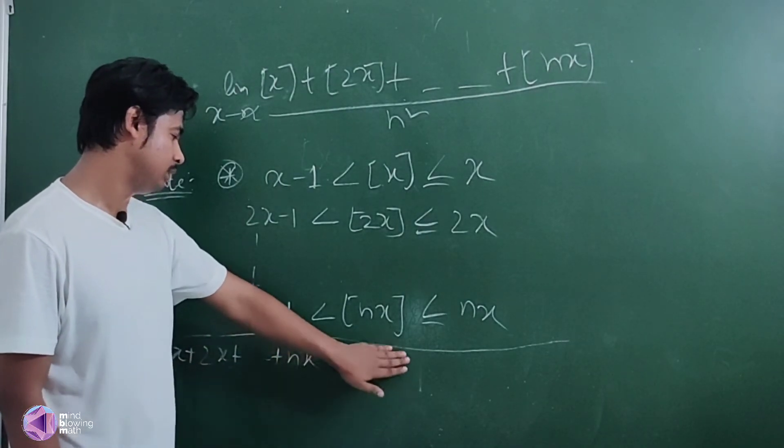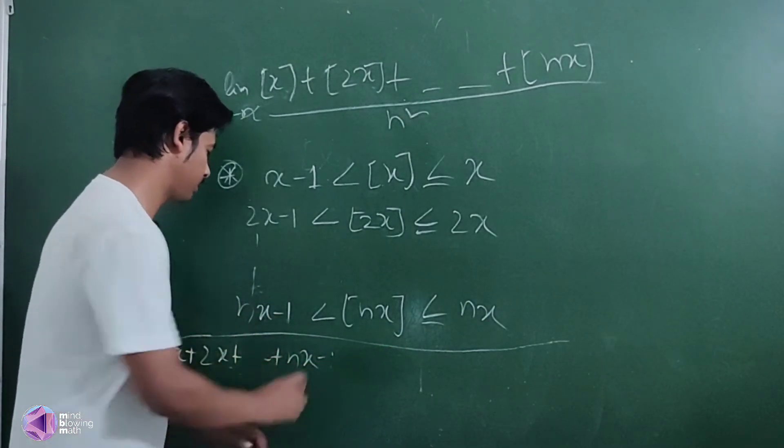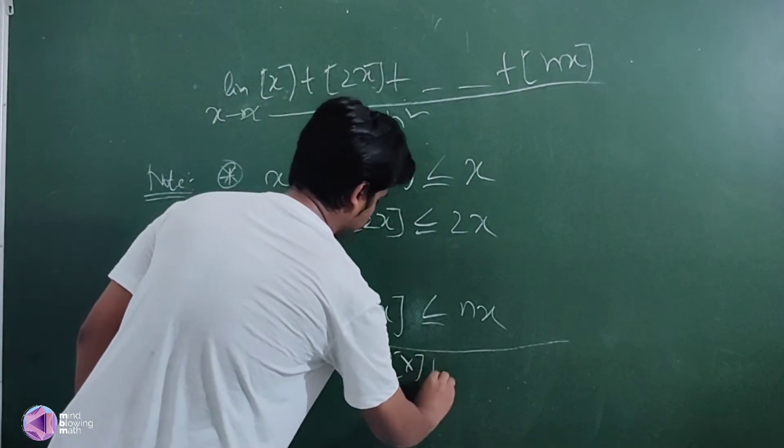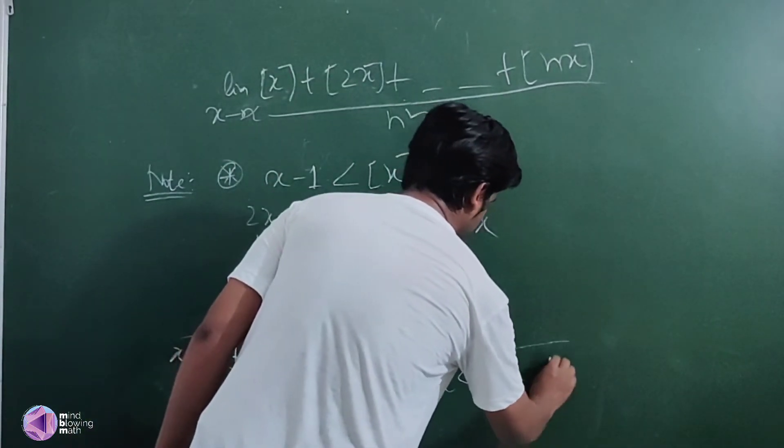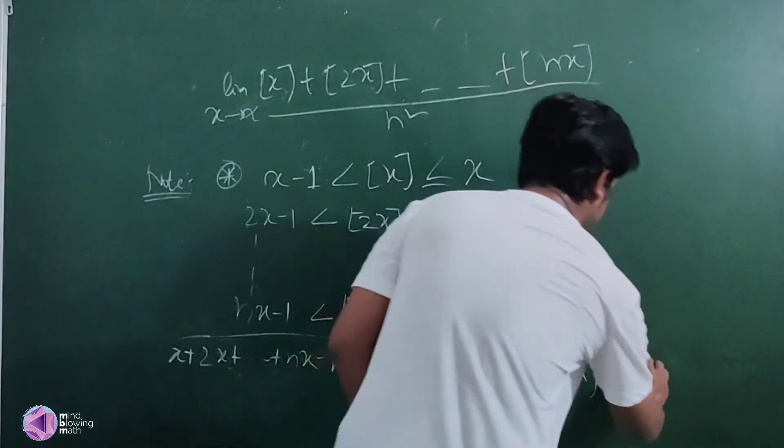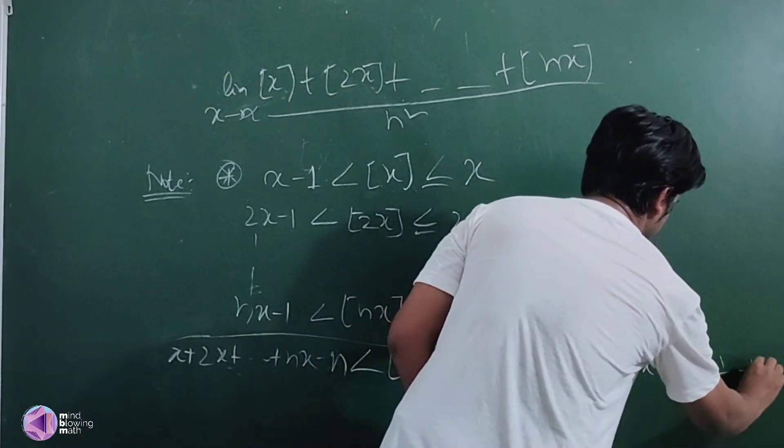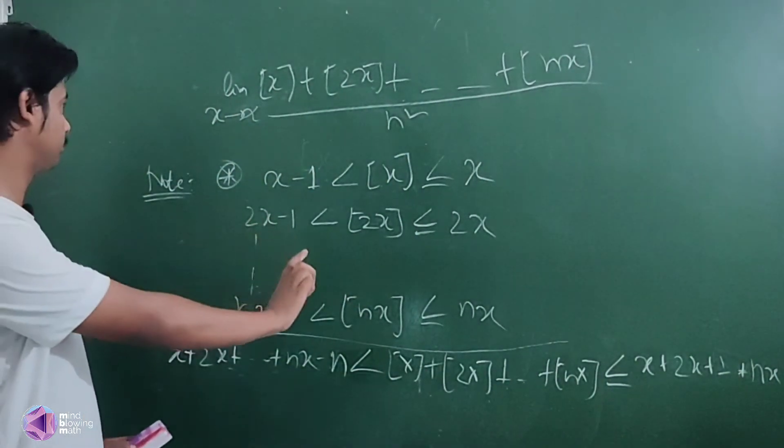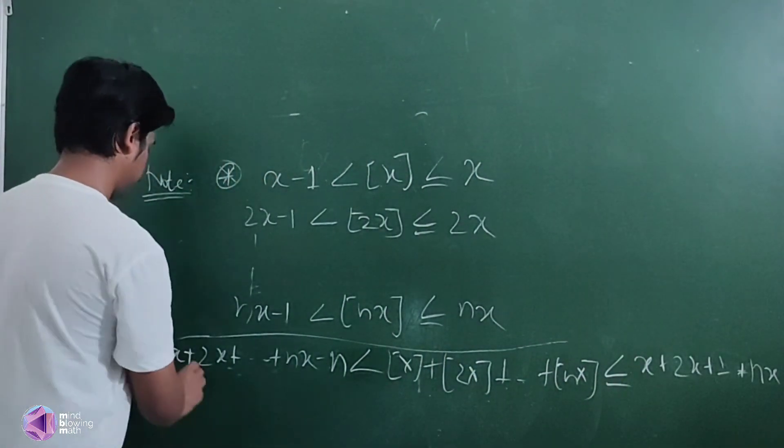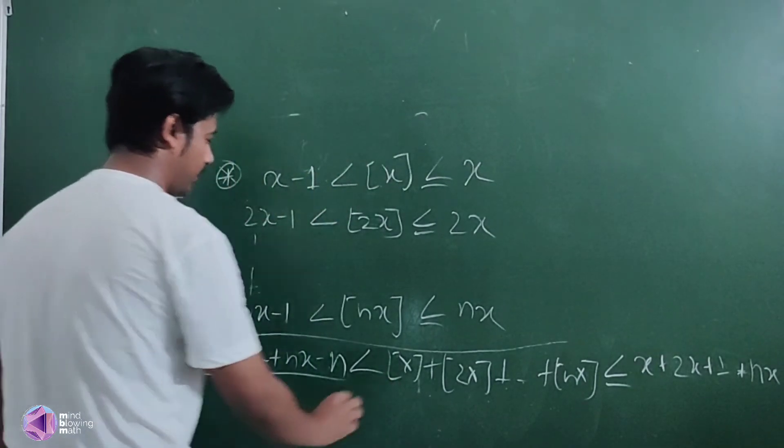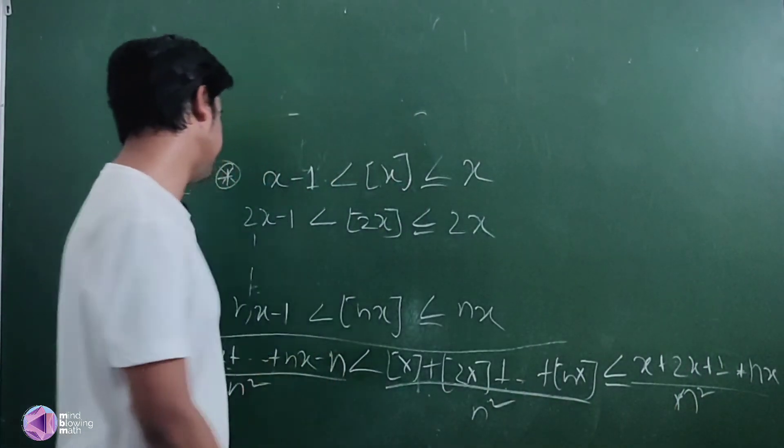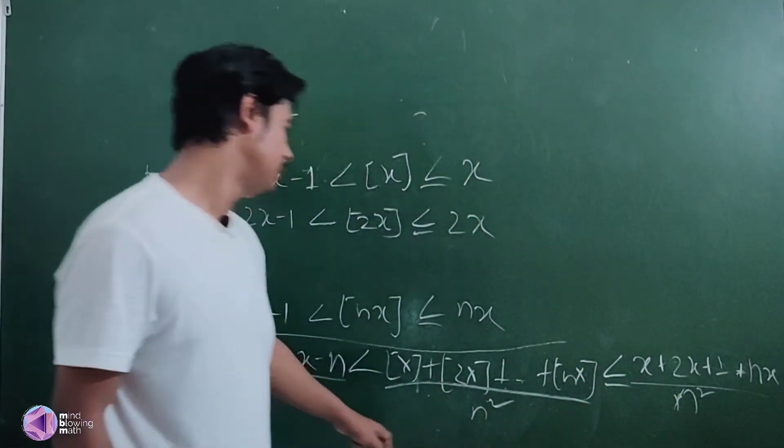Applying this property to each term and adding: (x + 2x + ... + nx) minus n is less than [x] + [2x] + ... + [nx], which is less than equal to (x + 2x + ... + nx). Dividing everything by n square and taking the limit.